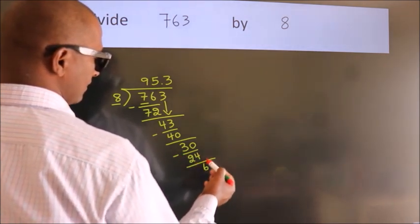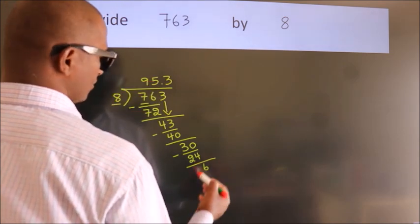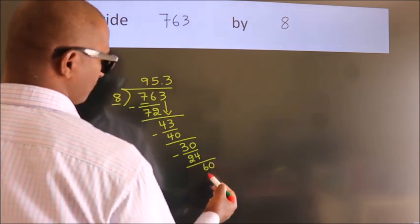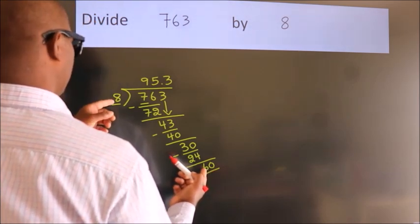After this, we already have the decimal. So, directly take 0. So, 40. When do we get 40 in the 8 table?